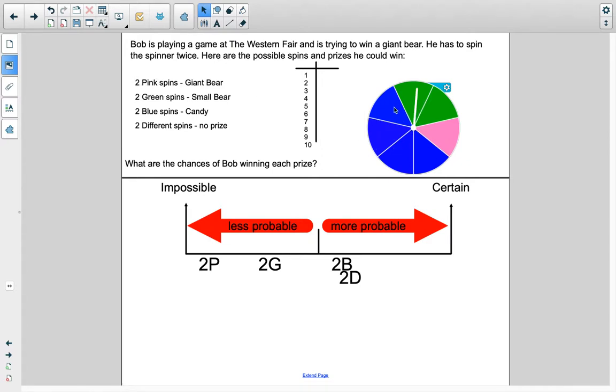So first spin, green. Second spin, no prize. So I'm going to put an X there. Except that X is too big. I'm going to get 14. There's our X.